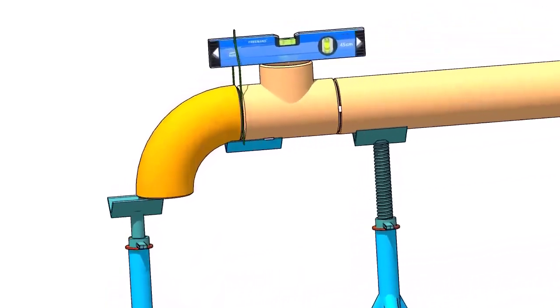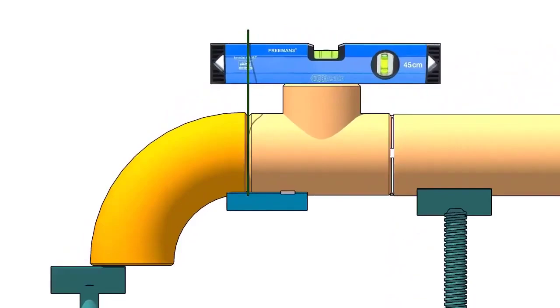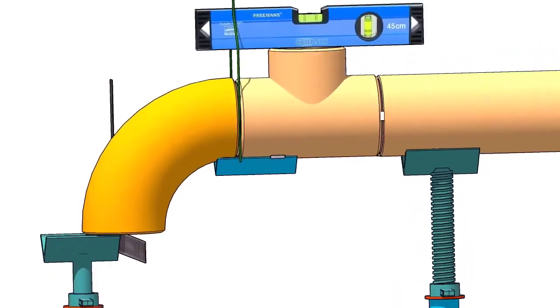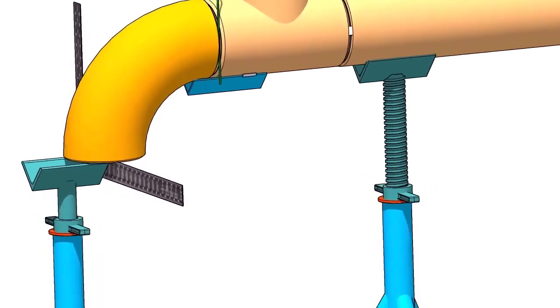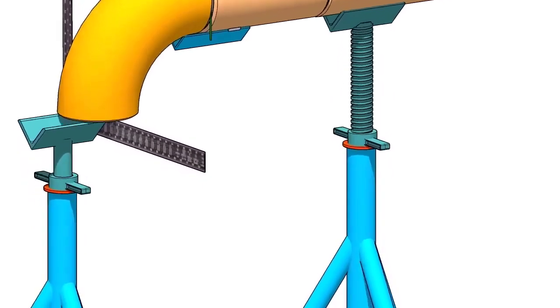Hold a large right angle or a straight edge below the elbow face, firmly. Put a level bottle on the right angle as shown. Rotate the elbow to make the face level.